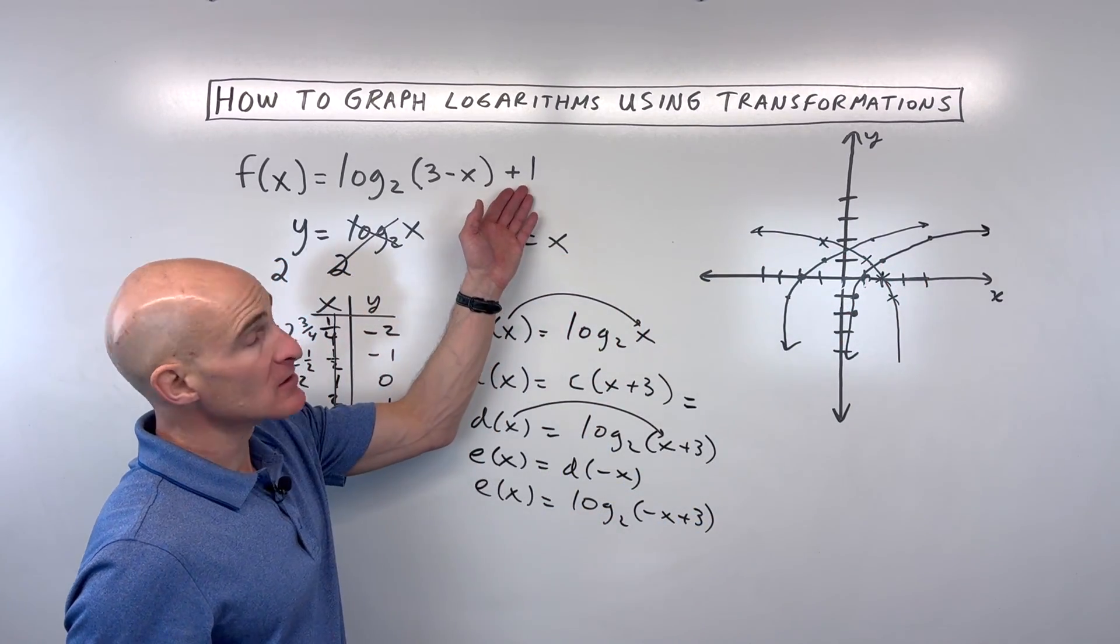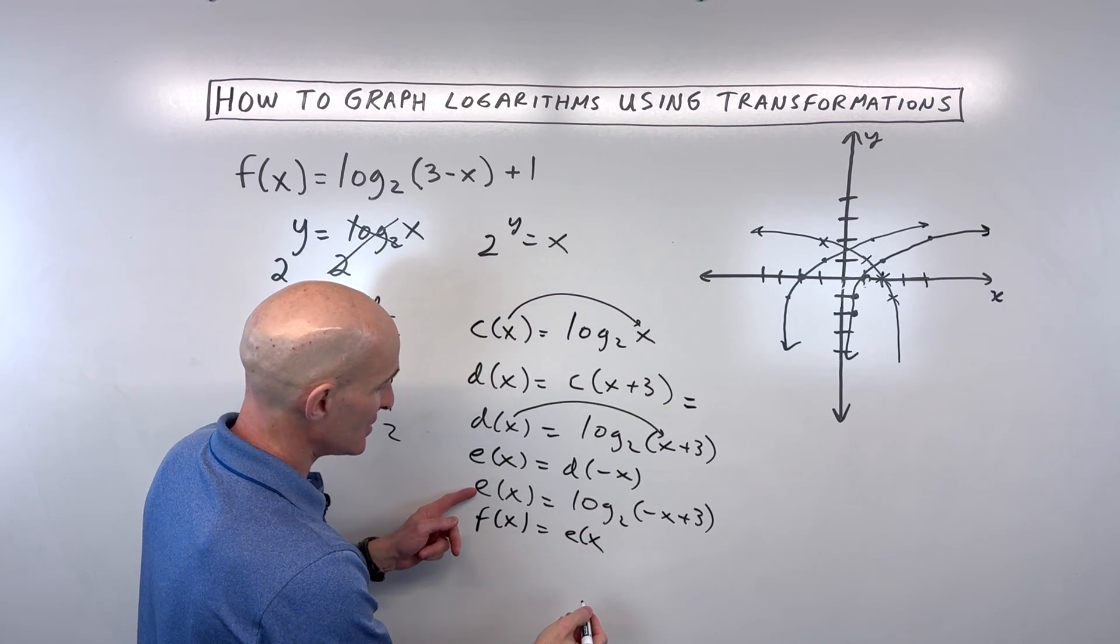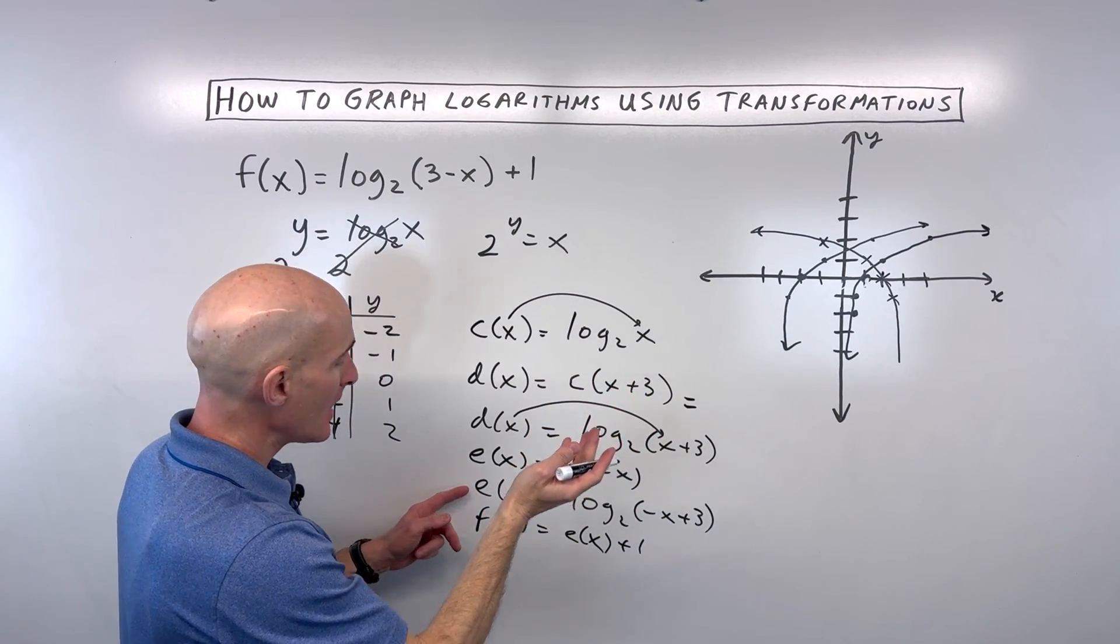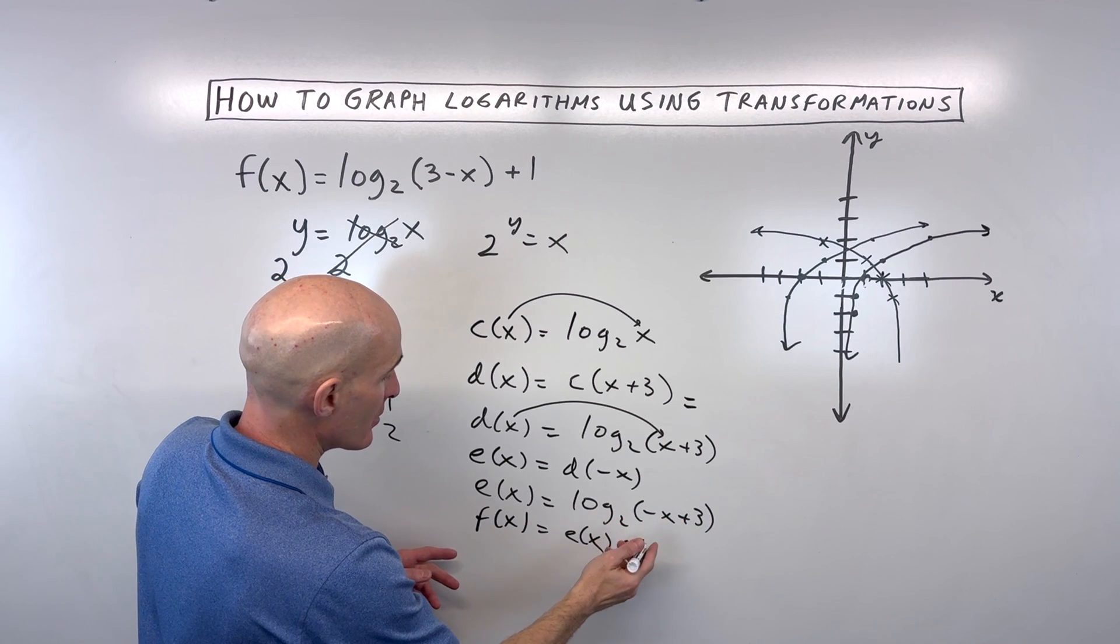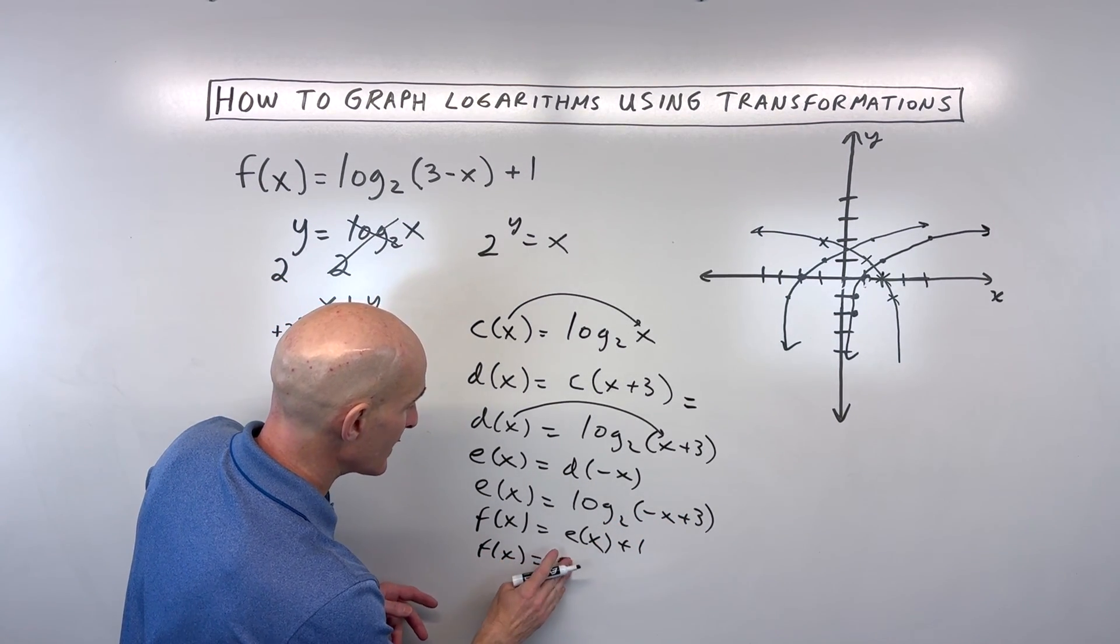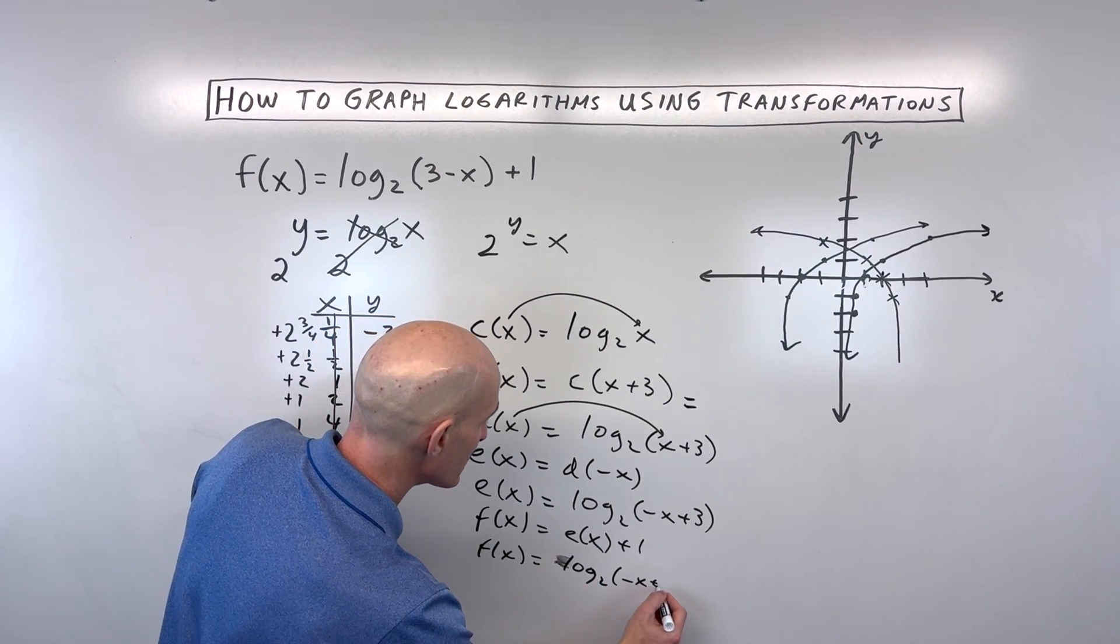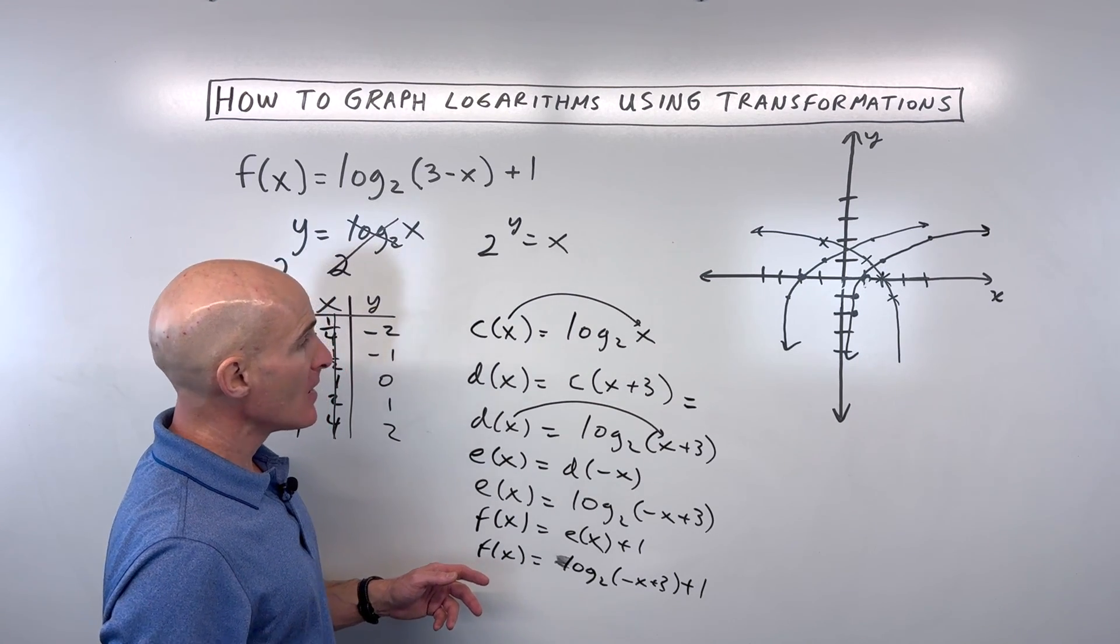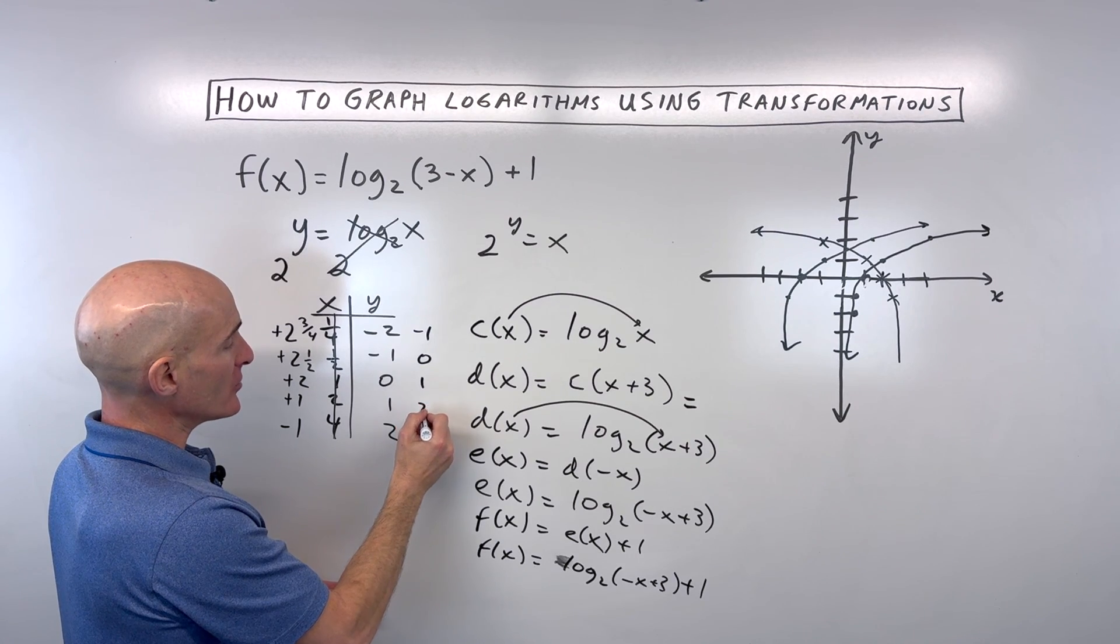Now all we have to do is this plus 1. So we could say f of x is equal to our previous function e of x plus 1. That plus 1 is just shifting the graph up 1. And of course, e of x is this guy here. And so this would be f of x is equal to log base 2 of negative x plus 3 plus 1, which is this equation here that we were working with originally. But plus 1 means we're going to shift it up 1. I'm just going to add 1 to all these y values.